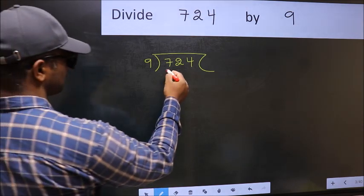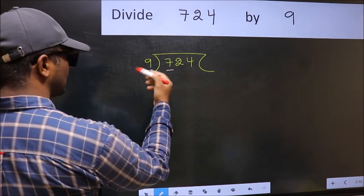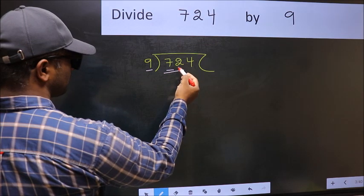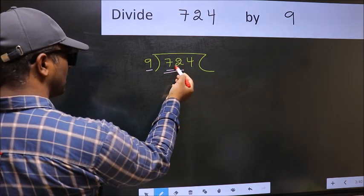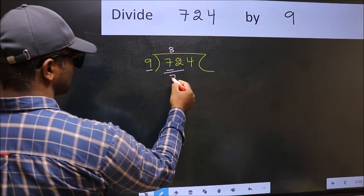Here we have 7 and here 9. 7 is smaller than 9, so we should take two numbers, 72. When do we get 72 in 9 table? 9 times 8, 72.